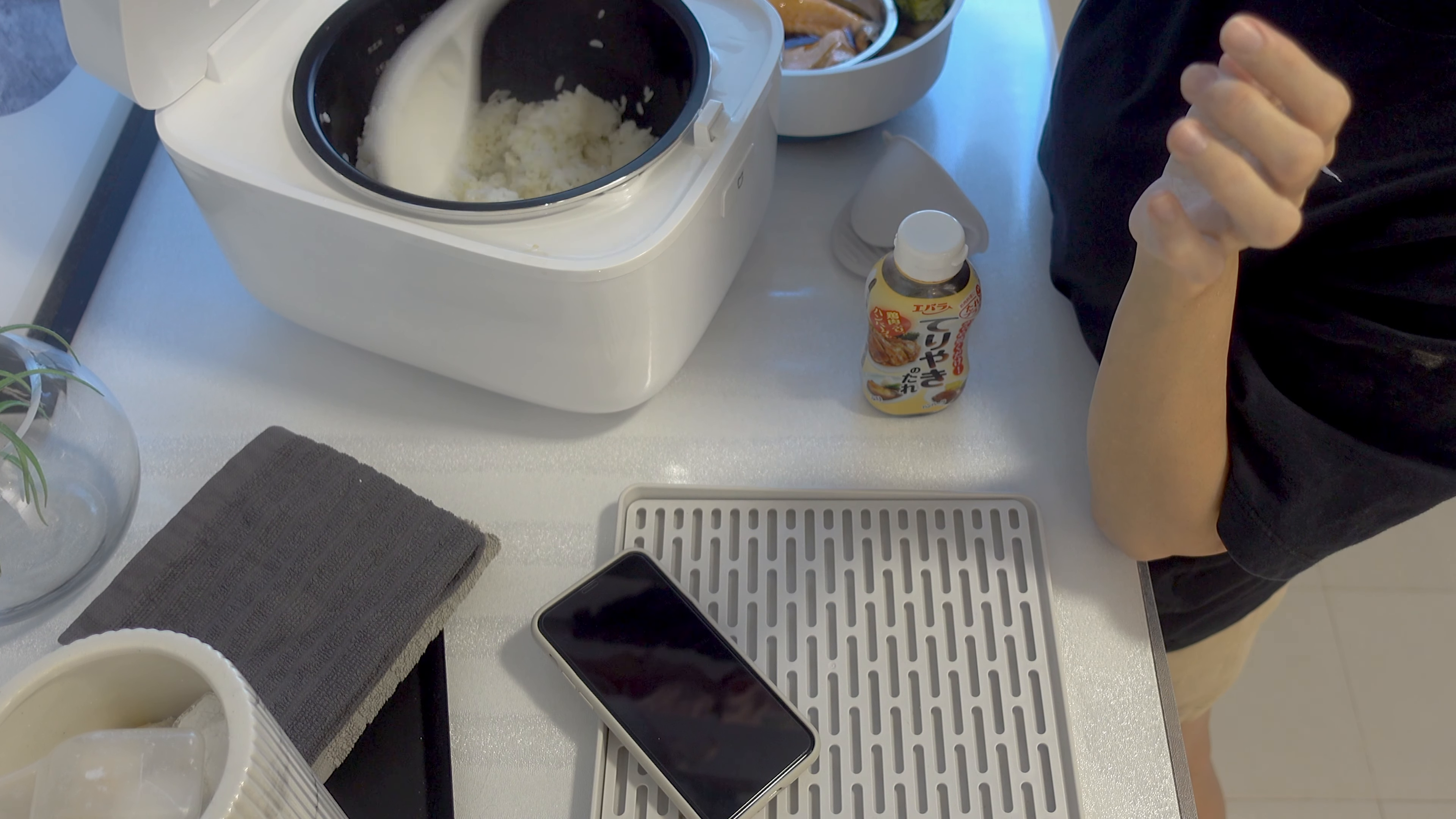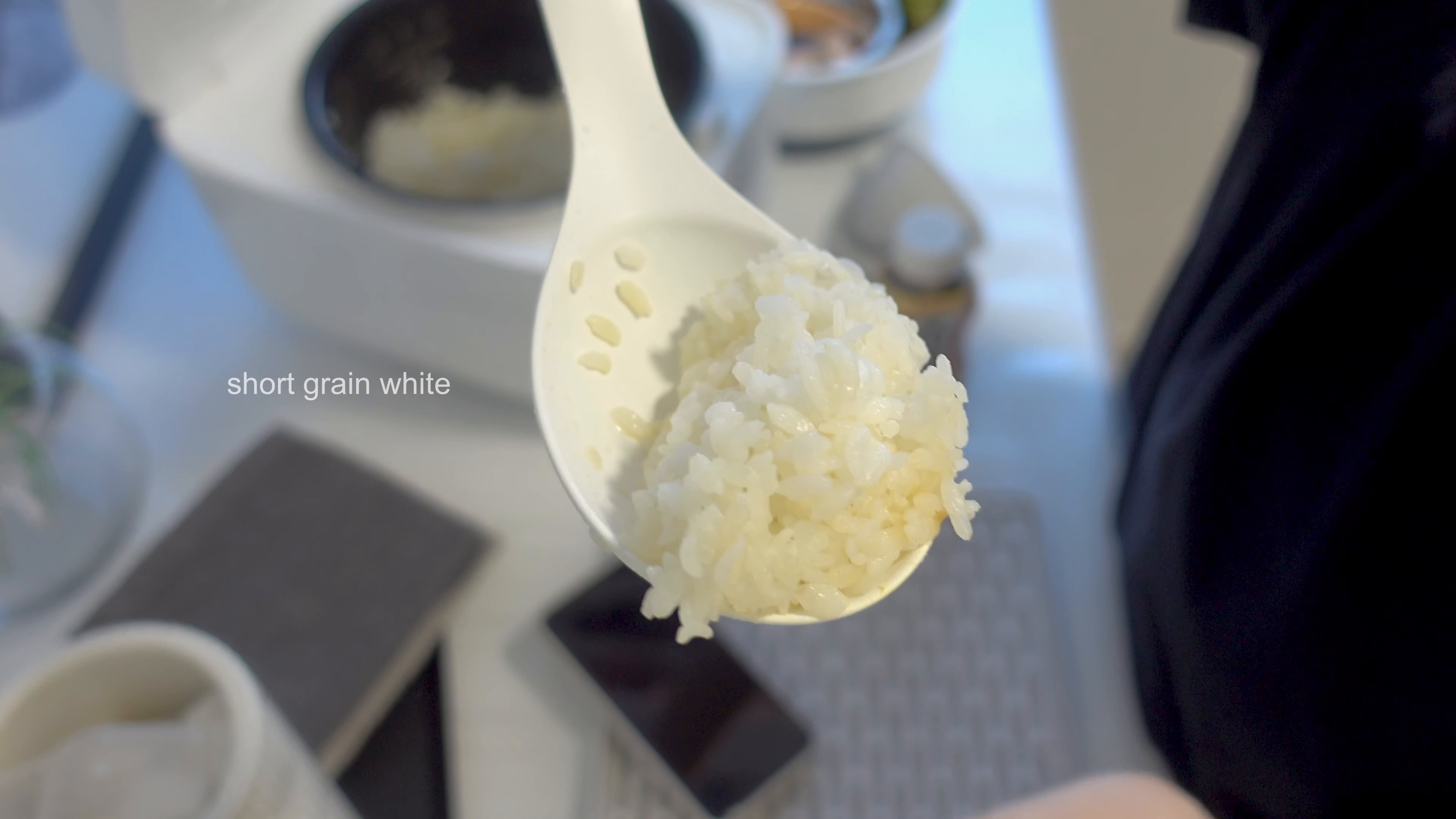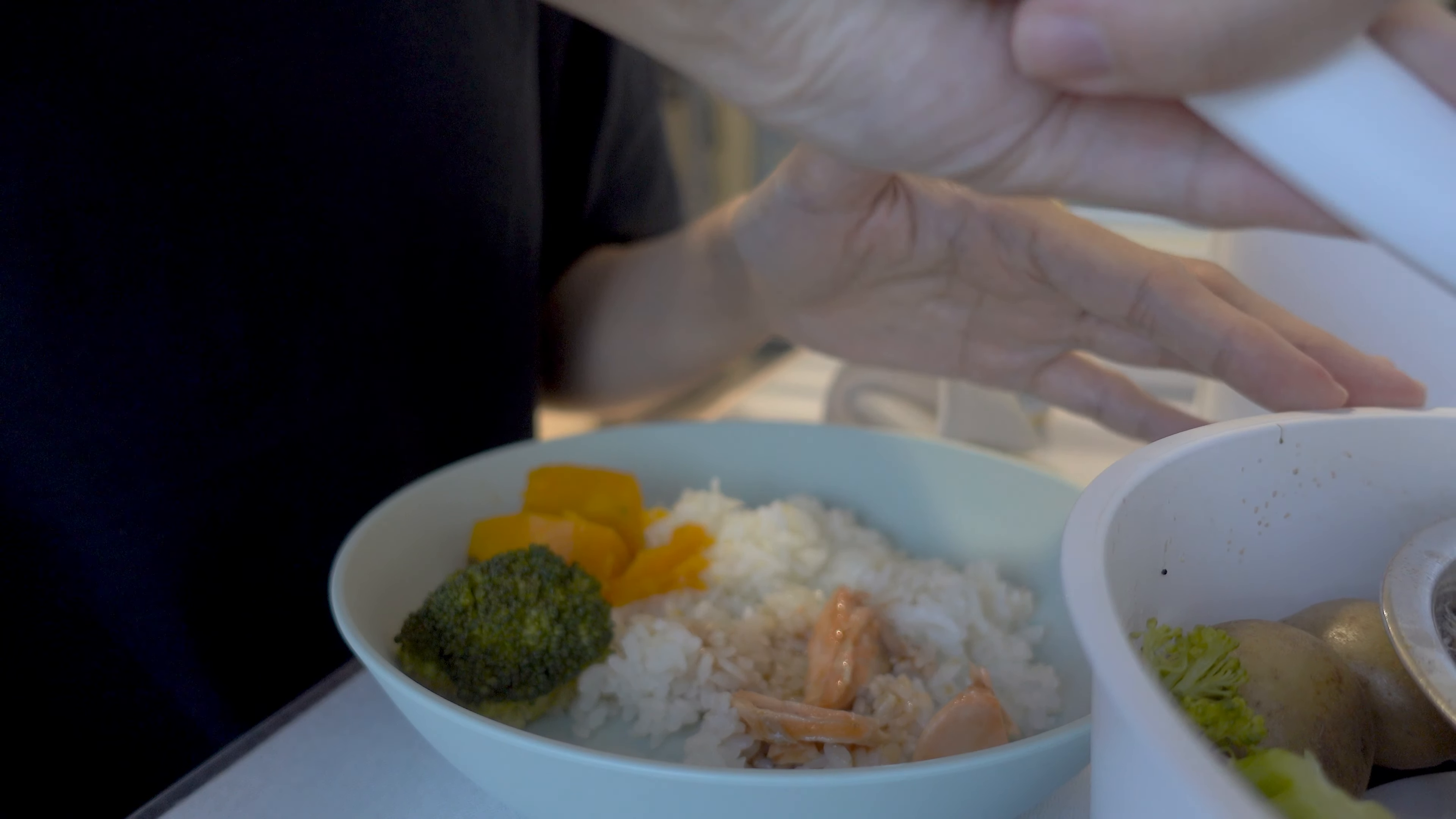Let me just show you. This is the type of rice that I'm using. It is the short grain kind of rice. You can buy the Japanese type or the Taiwanese type of short grain rice. This is the salmon. Right now I'm preparing the portion for Emma.